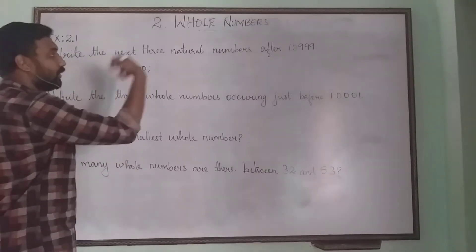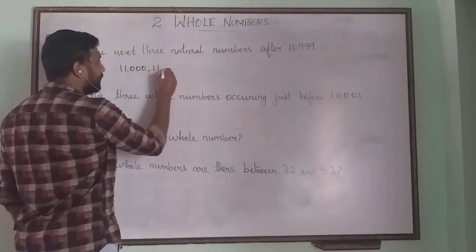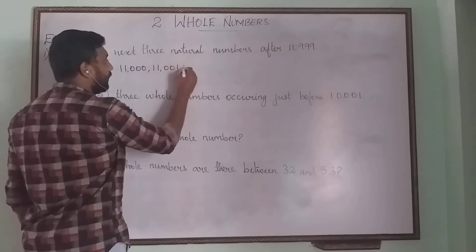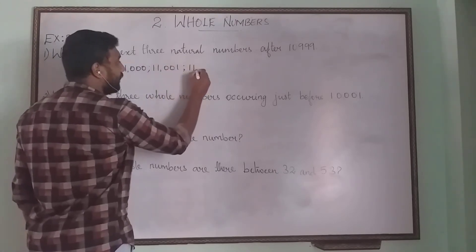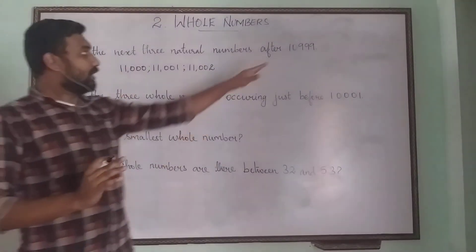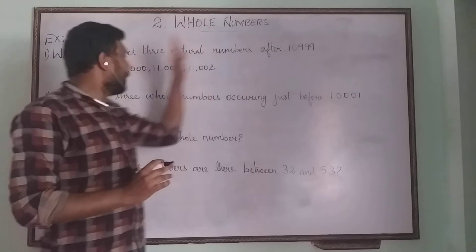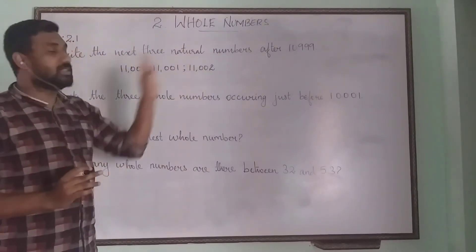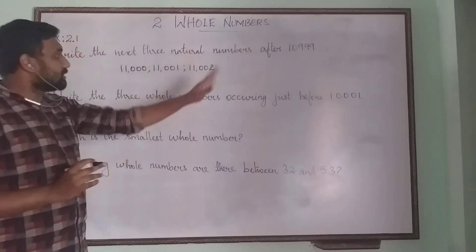After 11,000, what will be the next number? 11,001 and the third number will be 11,002. So from 10,999 onwards, you will be adding one in sequence and get the three next numbers.